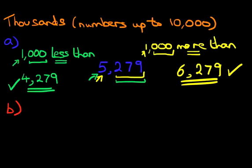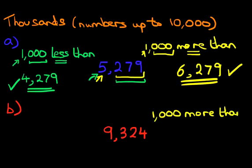Now suppose you have the number 9,324. Now the question is, what is 1,000 more than 9,324? Now we're going to count forwards, and because this is so easy, I want you to shout out the answer.